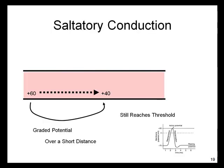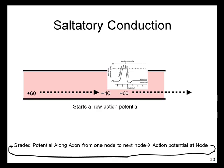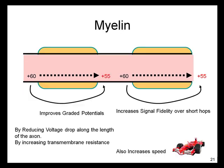The idea behind saltatory conduction is that a graded potential traveling over a short distance can still reach threshold for an action potential, which starts a new action potential. So all along the length of the axon's membrane there is a cycle: a graded potential travels electrotonically along the axon from one node to the next, which leads to a new action potential at the next node. That action potential creates a graded potential that travels electrotonically even further along the axon to the third node, which leads to a new action potential at the third node, and so on. The way that myelin speeds up axonal conduction is by improving how graded potentials travel along the axon.